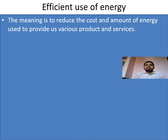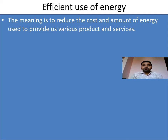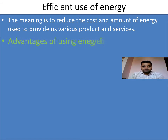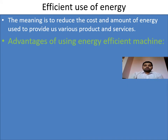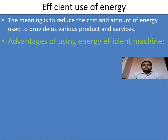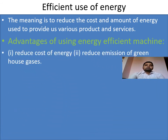Efficient use of energy means reducing the cost and amount of energy used to provide various products and services. When we use energy, we need machines that consume less energy while producing more output — that is efficient use. The advantages of using energy-efficient machines include reduced energy costs (lower electricity bills) and reduced emission of greenhouse gases, which is good for our environment given concerns about global warming.